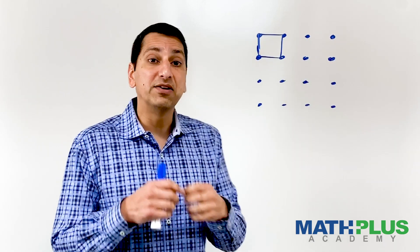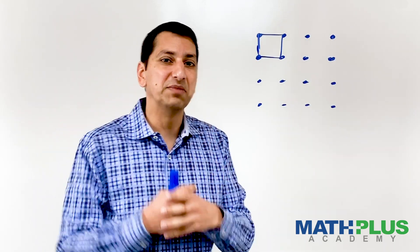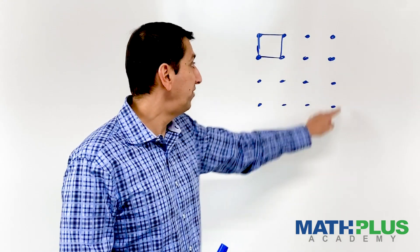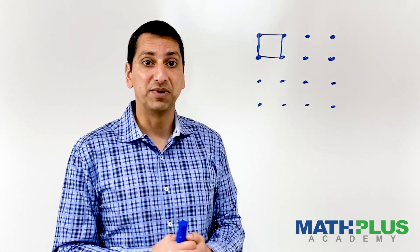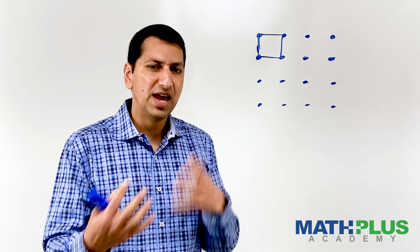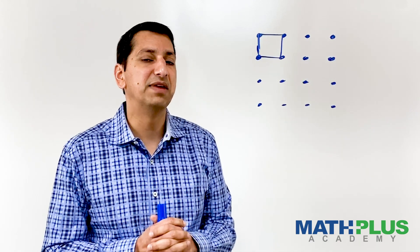Second thing is you might find that there are squares of different sizes that you can make. In fact, the whole thing is also a square. So that's another one I can make. And there are some medium-sized squares that I can make in between.